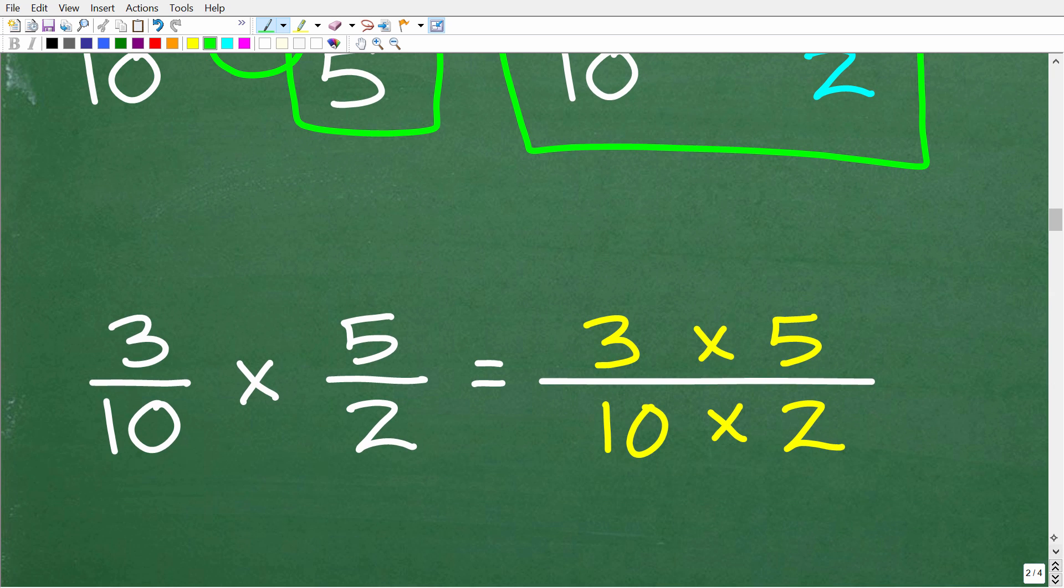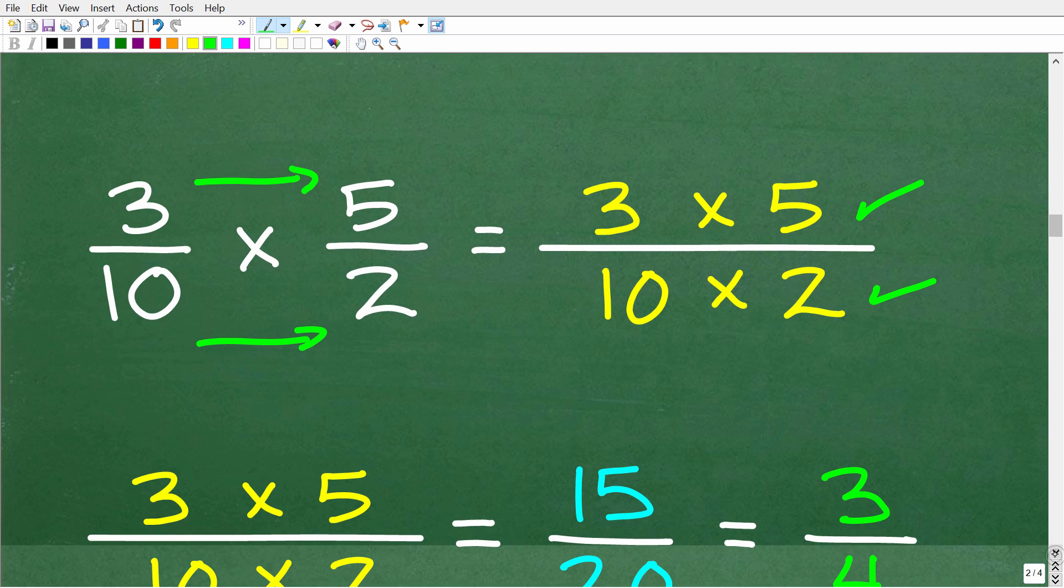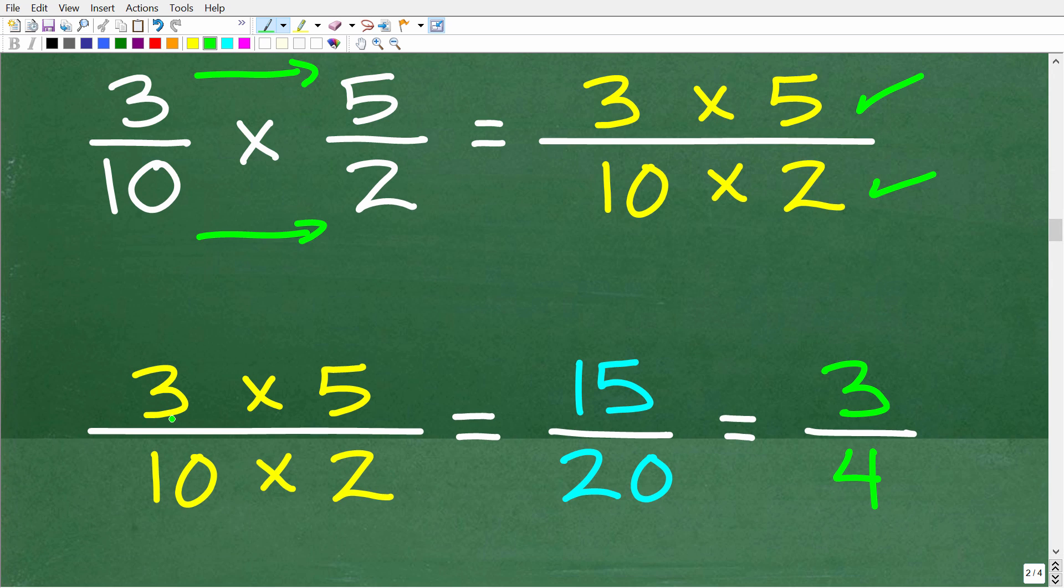How do we multiply fractions? This is very easy. All we have to do is multiply the respective numerators and denominators. That's going to be 3 times 5, that will be our numerator, and our denominator will be 10 times 2. We have some opportunities here to simplify, but let's just finish up the problem. Three times five is 15, and ten times two is 20. So we have the result of 15/20, which is the result of multiplying these two fractions.